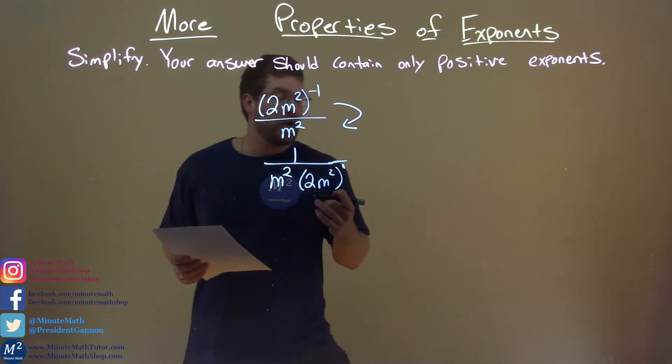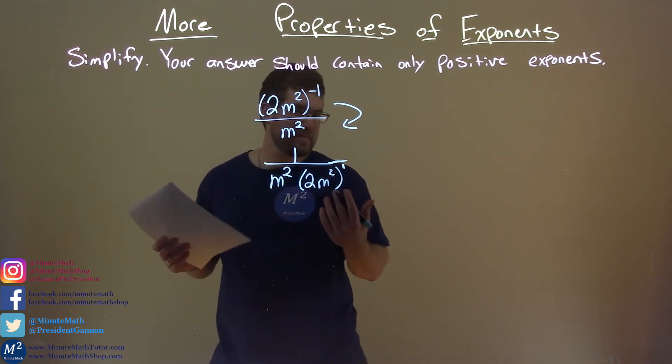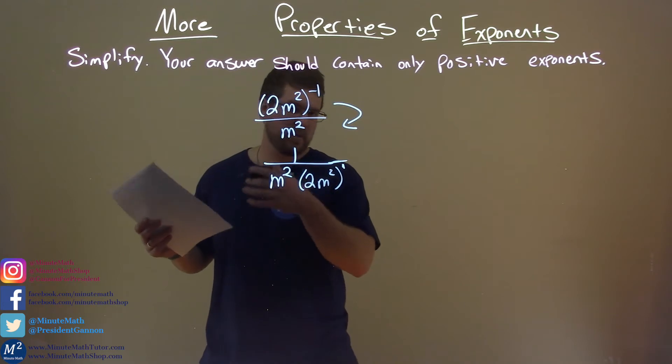So now we can simplify just the denominator. 2 times the coefficient in front of the m squared, there's just 2. There's a 1 there. 2 times 1 is 2.